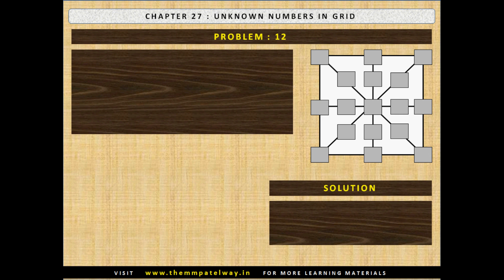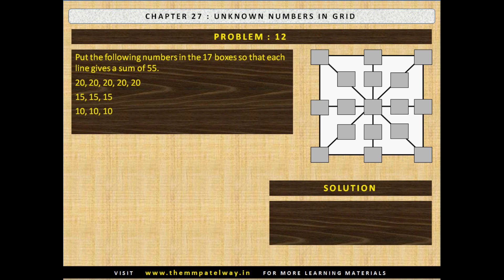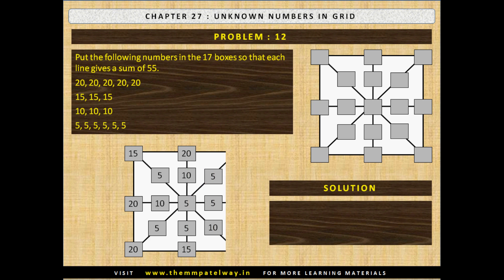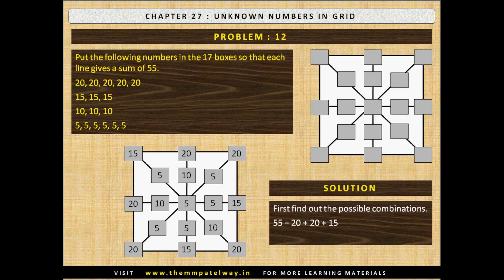Problem 12. Put the following numbers in the 17 boxes so that each line gives a total of 55: six 20s, four 15s, three 10s, and seven 5s. Now stop the video and solve the problem. The solution is shown. To solve this, first find out the possible combinations: 55 equals 20 plus 20 plus 20 plus 15; also 55 equals 20 plus 15 plus 10 plus 5 plus 5. Then proceed logically to get the solution.